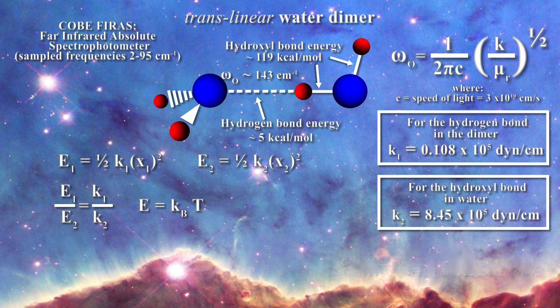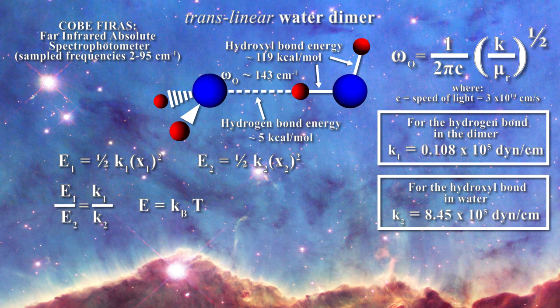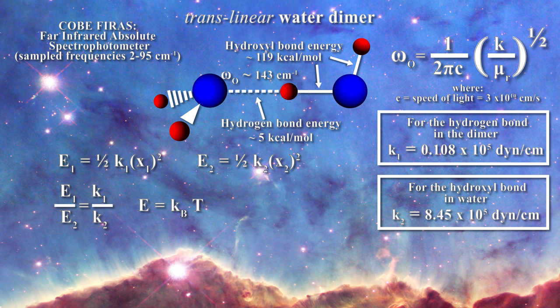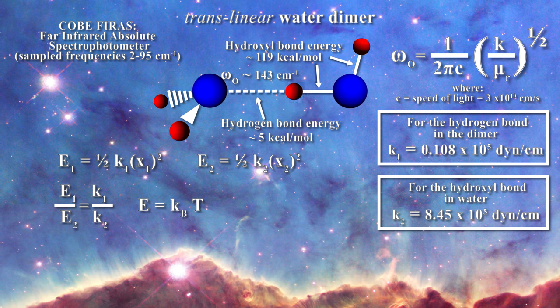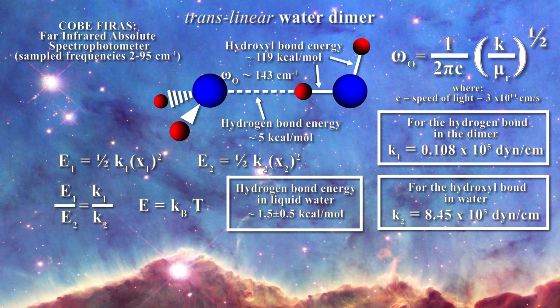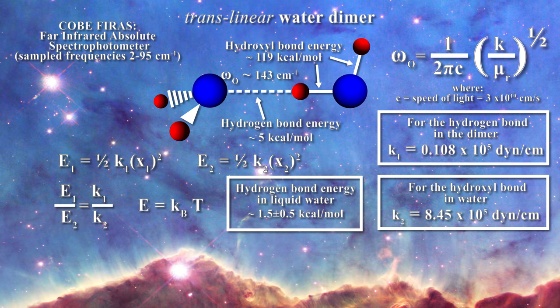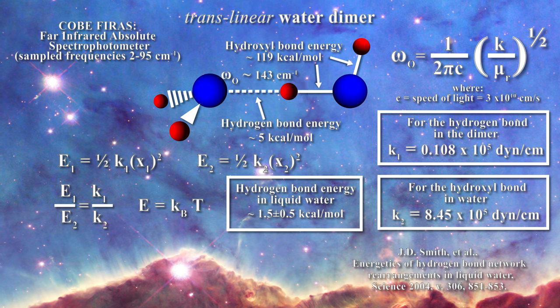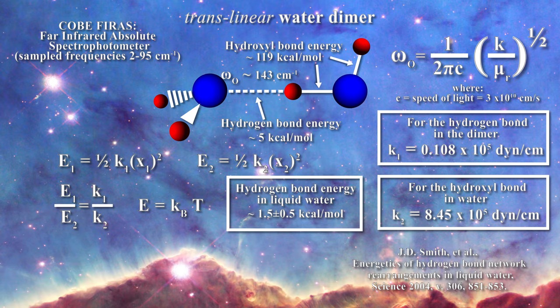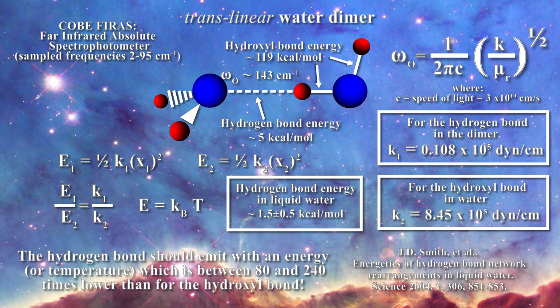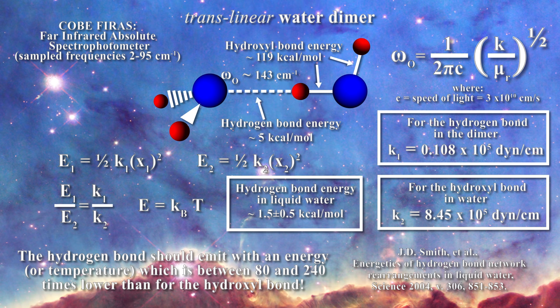The hydrogen bond in the water dimer has been estimated to have a bond energy of about 5 kilocalories per mole as we saw above. But in liquid water, the hydrogen bond energy is much weaker, on the order of only 1.5 plus or minus 0.5 kilocalories per mole as one can learn in this paper. As a result, one might expect that the hydrogen bond in liquid water might emit with an energy which is somewhere between 80 and 240 times lower than for the hydroxyl bond.